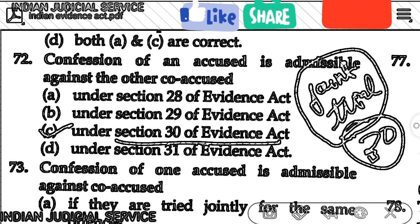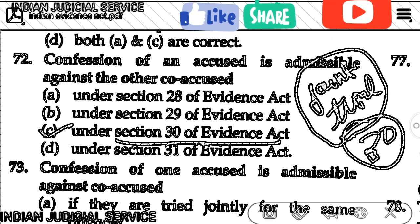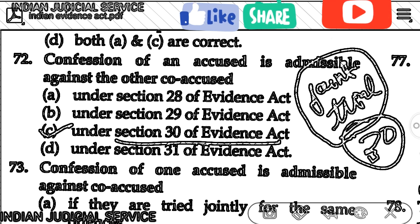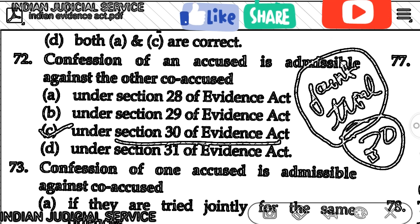A very important case related to Section 30 is Bhuvani Sahu vs Emperor (1949, Privy Council). In this context it is noted that the co-accused's confession is made without oath and without cross-examination, making such a witness an unworthy witness.